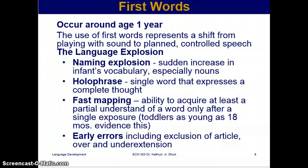Fast mapping is the ability to acquire at least a partial understanding of a word after only a single exposure. Toddlers as young as 18 months show evidence of this — they can acquire at least a partial understanding of a new word from just one exposure.